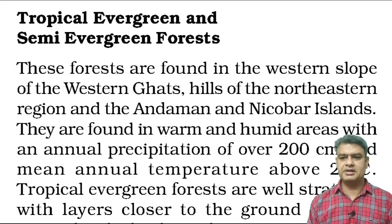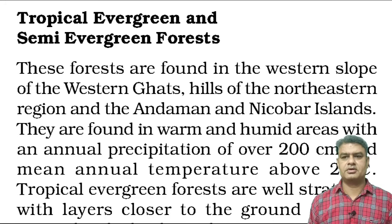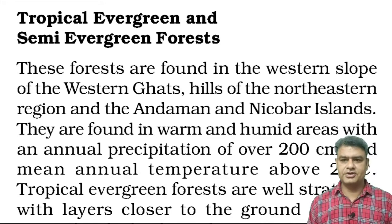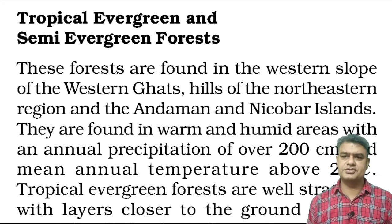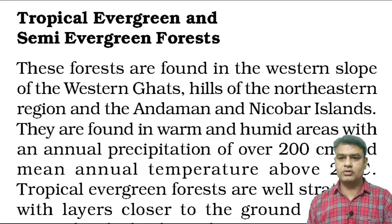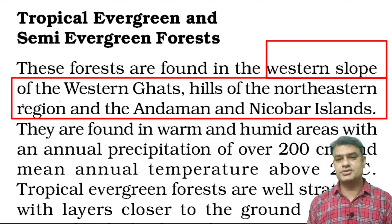The first one is tropical evergreen forest. These are natural forests that remain green throughout the year. Tropical evergreen forests are found on the western slope of the Western Ghats, hills of the north-eastern region, and in the Andaman and Nicobar Islands.